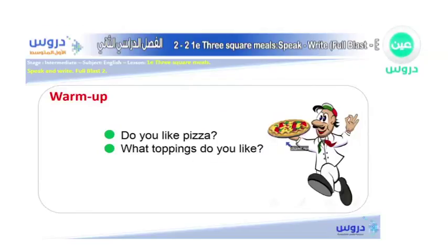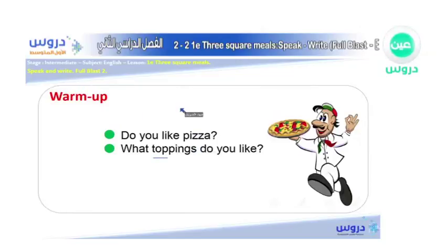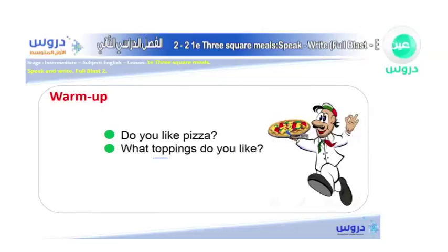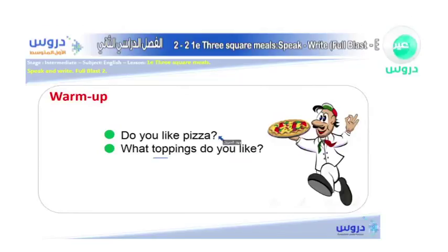Then it says: what toppings do you like? If you take the word 'top' — as in rooftop, top of the table — when we hear the word 'top,' it means something above something else. So 'toppings' refers to the things that are on the pizza. As you can see here, they have some cheese and some bacon and stuff. What toppings do you like on your pizza? Probably the fan's favorite, which is pepperoni — some sort of beef meat. I'd go with pepperoni because it's the best.